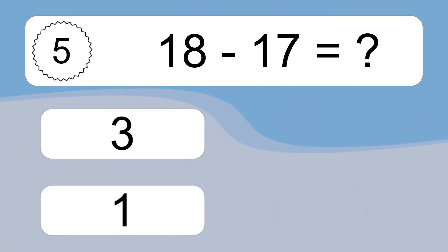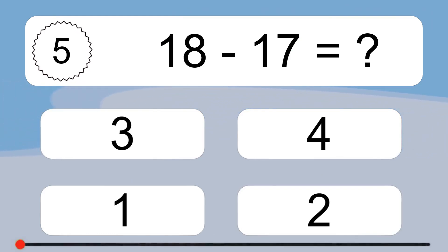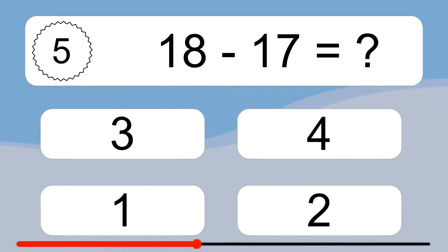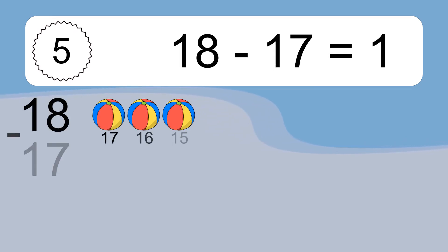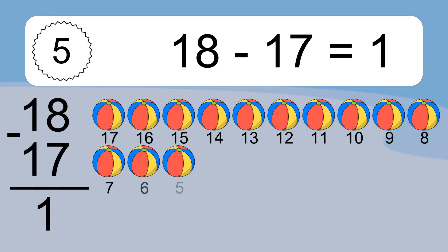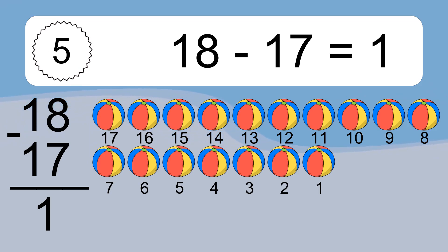18 minus 17 equals what? 18 minus 17 equals 1. Let's count it: 17, 16, 15, 14, 13, 12, 11, 10, 9, 8, 7, 6, 5, 4, 3, 2, 1.